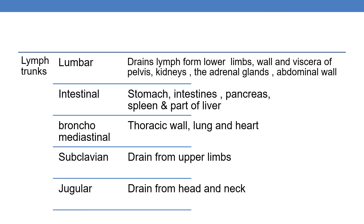There are five lymph trunks. The lumbar trunk drains lymph from the lower limbs, wall and viscera of the pelvis, kidneys, adrenal glands, and abdominal wall. The intestinal trunk drains lymph from the stomach, intestine, pancreas, spleen, and part of the liver. The bronchomediastinal trunk drains lymph from the thoracic wall, lungs, and heart. The subclavian trunk drains lymph from the upper limbs. The jugular trunk drains lymph from the head and neck.